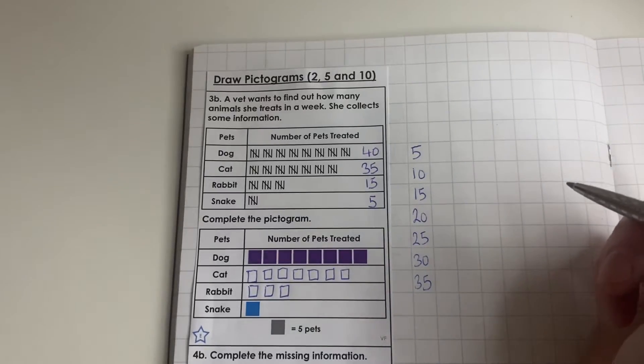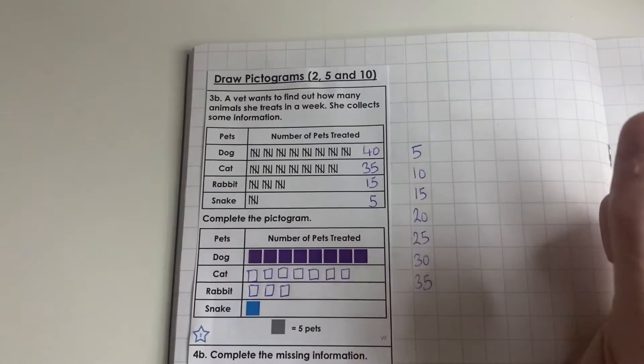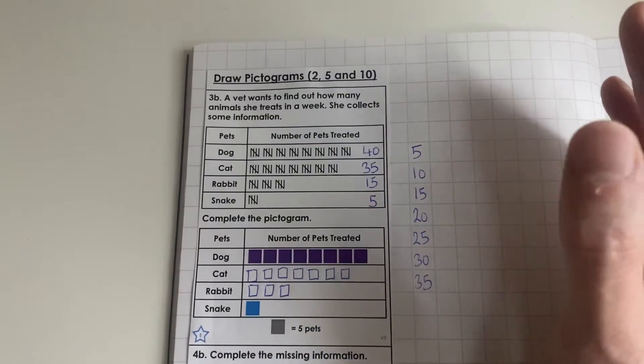And that's our pictogram drawn. Now if you don't have a printer at home, I should have said this before, you can just draw out the table in your book and you can do it from there. You don't need to worry about printing this resource out.